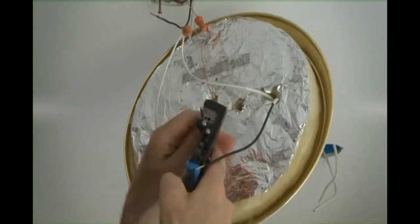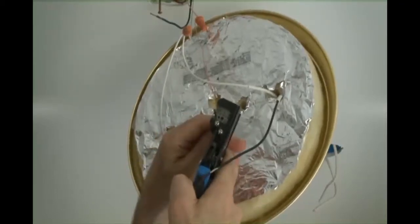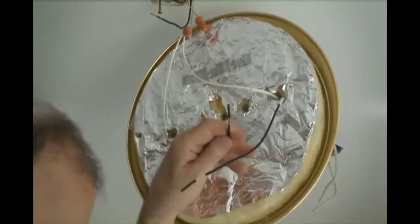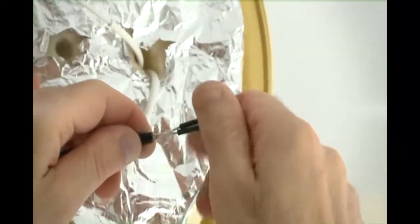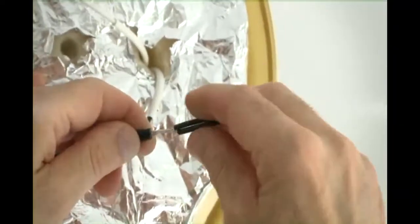When splicing stranded wires, strip the insulation partially. This keeps the strands together and allows the ends to be used as handles to twist the wires together.